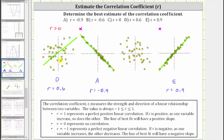We still have a positive linear correlation, but it's not as strong as the previous scatterplot. For the last scatterplot, we can see in general as one variable increases, the other decreases. If we were to sketch a line of best fit, it might look something like this. Because the line of best fit has a negative slope, we know r is going to be negative, but the correlation is not as strong because the points are further away from the line of best fit. So r is going to be negative, but not as close to negative one, and therefore let's select r equals negative 0.6, which is b.